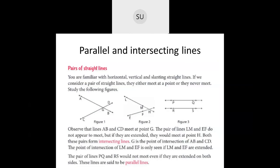We also saw parallel lines and intersecting lines. When two lines meet at a certain point, that is called intersecting lines, and the point where they meet is called the point of intersection. Some lines only meet when you extend them, like lines LM and EF meeting at point H. But there are lines which never meet even if extended in both directions — those are called parallel lines. An example of parallel lines is railway tracks.